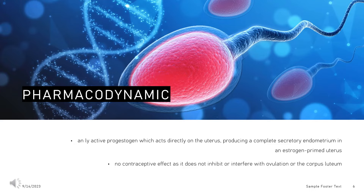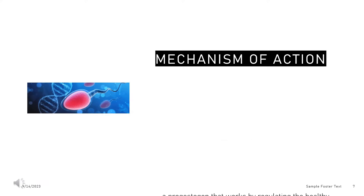Dydrogesterone helps to regulate the healthy growth and normal shedding of the uterus lining. Therefore, it may be useful in the treatment of menstrual disorders such as irregular or painful menstrual periods, infertility, premenstrual syndrome, and endometriosis.